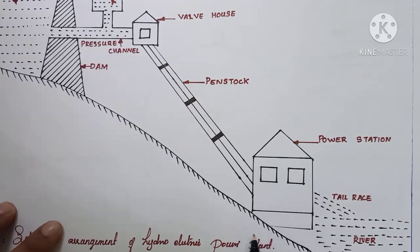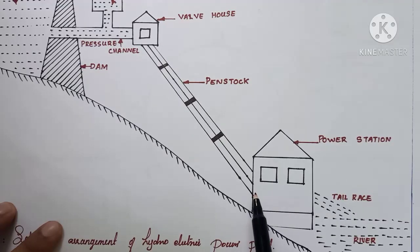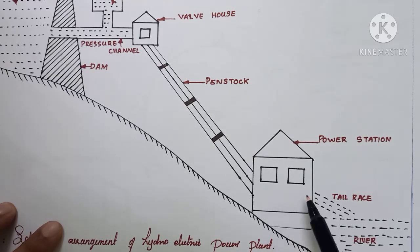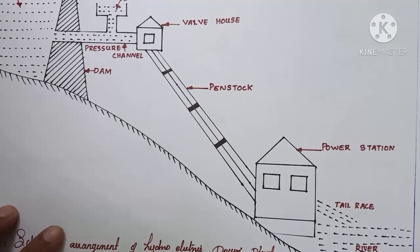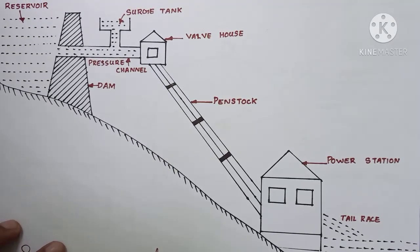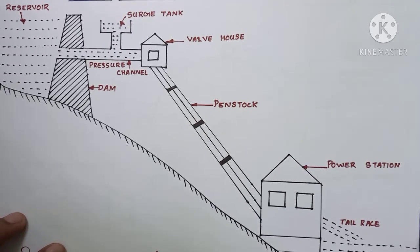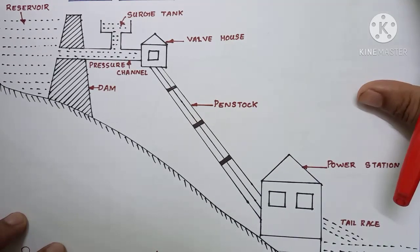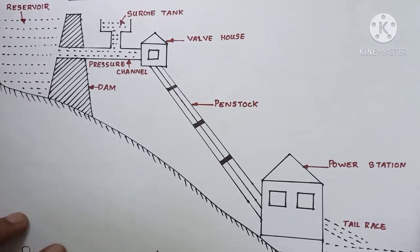The power house is the area which converts the hydraulic energy of water into electrical energy. The remaining water from the power house enters the tail race and finally goes to the river. The function of the power station is as follows.